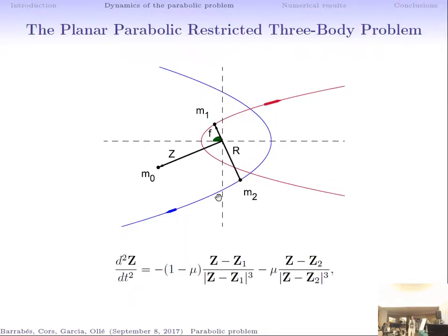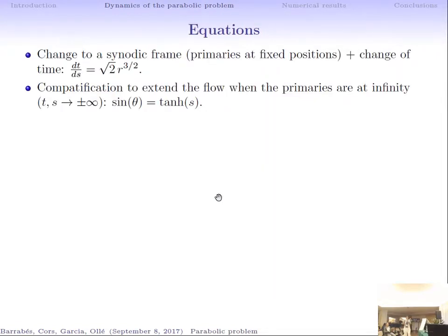In the planar restricted three-body problem in the parabolic case, we have two main bodies M1 and M2 in parabolic orbits, and M0 is any massless non-interacting particle. R is the mutual distance between the two primaries, which decreases from infinity to the closest approach and then increases again. We write down the equations with standard normalization, then change to a rotating frame, taking the line joining the two primaries as the X-axis, and rescaling distances so the primaries are always at distance one.